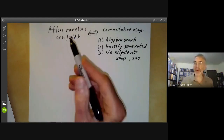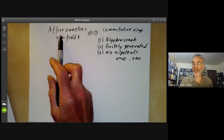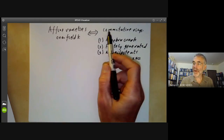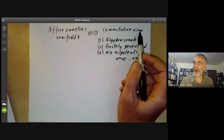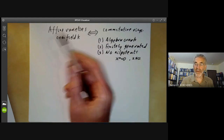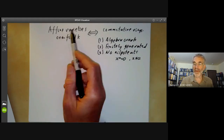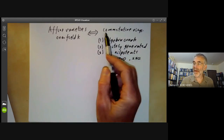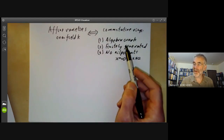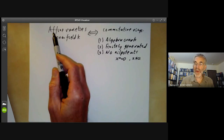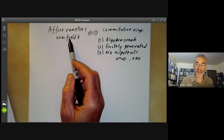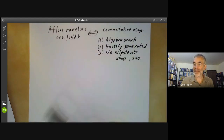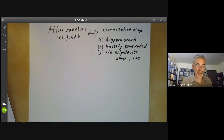The correspondence is as follows. Given an affine variety over a field K, you can take its coordinate ring, which is a commutative ring with these properties, and it basically consists of polynomial functions on the affine variety. Conversely, given a commutative ring with these three properties, you can reconstruct the affine variety. For example, the points of the affine variety correspond to maximal ideals of this commutative ring.